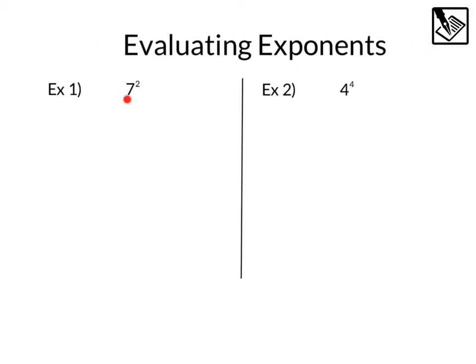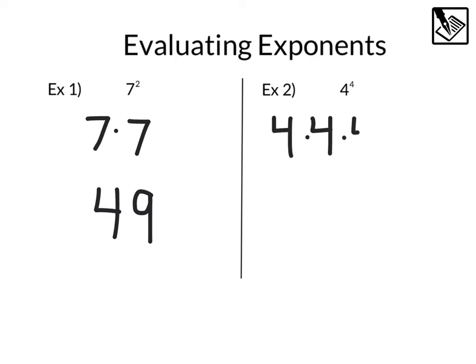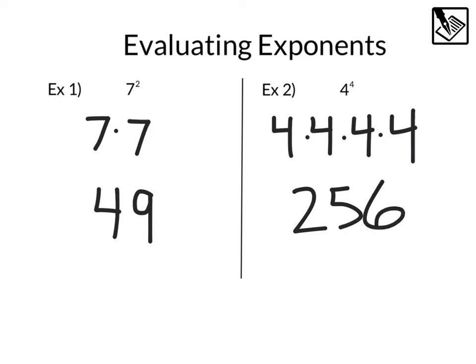So when we evaluate exponents like these — seven squared — we basically take that base of seven and multiply it two times, because that's the exponent. And that would be seven times seven, which is forty-nine. Likewise, four to the fourth power would be four times four times four times four, which is two hundred and fifty-six.